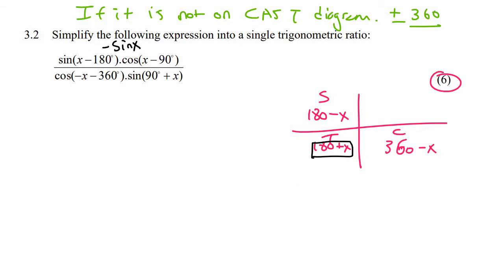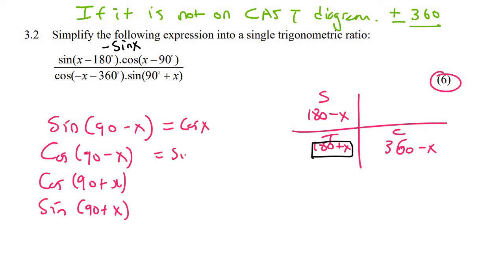Now, cos x minus 90. That's a challenging one. The reason is that in grade 11, we only learned 4 of these things. Let me show you. Take you down memory lane. These are the 4 that we knew from grade 11, and these were the different answers. And here they come with this.